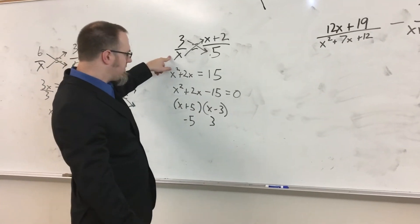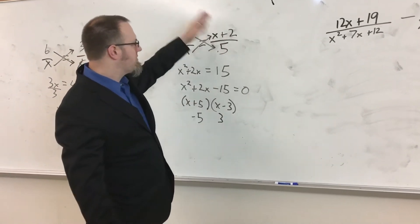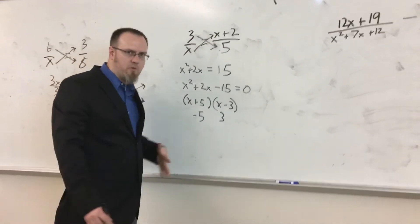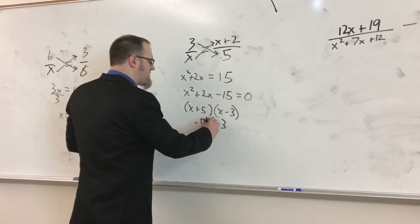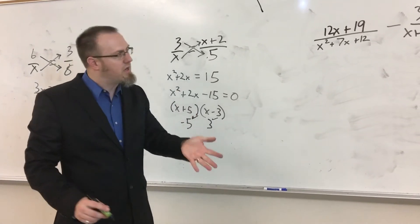A negative 5 here would be a negative 3 fifths. Negative 5 plus 2 is negative 3 over 5, which is also a negative 3 fifths. Both of these answers check out. Both of them work. There's no extraneous answer.